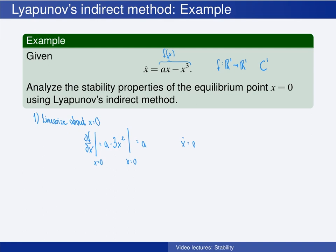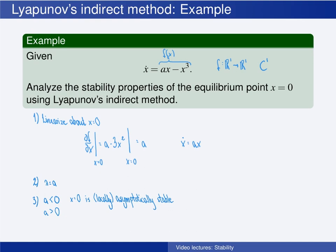So the linearized system is ẋ = Ax. The dimension of the system is 1, so there is only one eigenvalue: λ = A. The stability of the origin depends on the value of A. If A is negative, then by Theorem 4.7 the origin is locally asymptotically stable, and from Corollary 4.3 it is actually locally exponentially stable. If A is positive, then the origin is unstable. If A equals 0, then we cannot conclude anything about the stability of the origin using Lyapunov's indirect method.